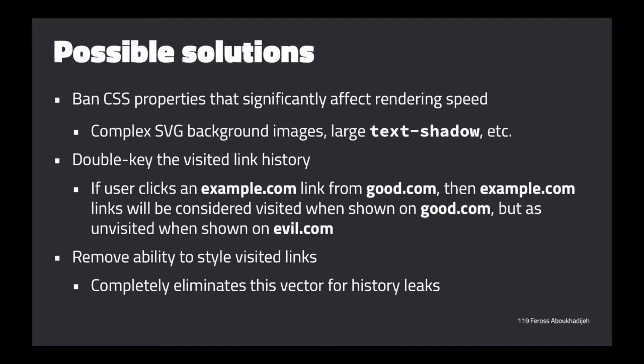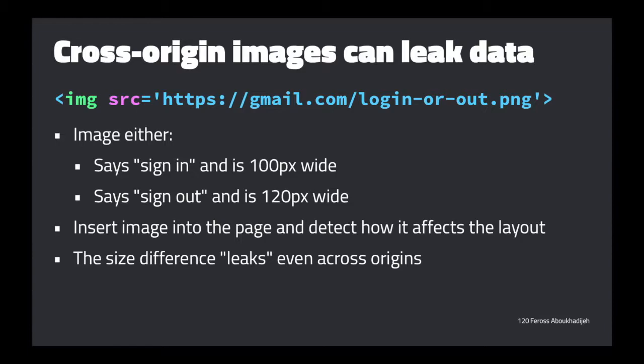The last option would be to completely remove the ability to style links — that would definitely fix this attack vector. One other way images can leak information: when you include an image using an image tag, cookies get attached to the request. So your Gmail cookies get attached. Imagine a login/logout button image on Gmail — the server checks the cookie and returns either a 'log out' button or a 'log in' button image.